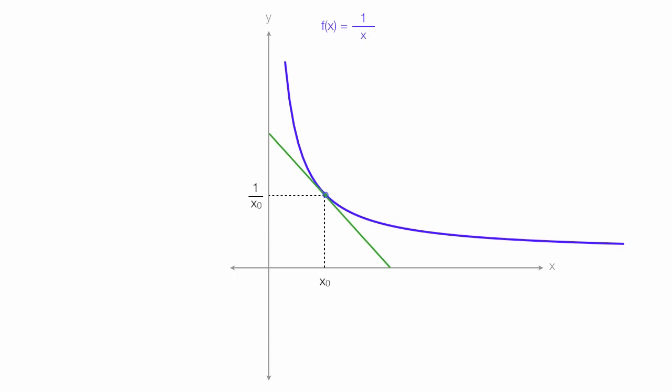The standard equation for a line is y minus y0 is equal to m times x minus x0, where m is the slope. The slope of this line is equal to negative 1 divided by x0 squared. I'm going to rewrite this: y minus y0 is equal to negative 1 over x0 squared times x minus x0.